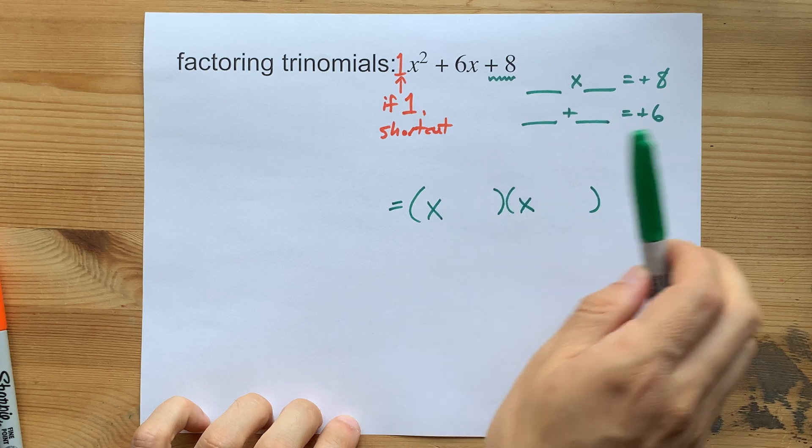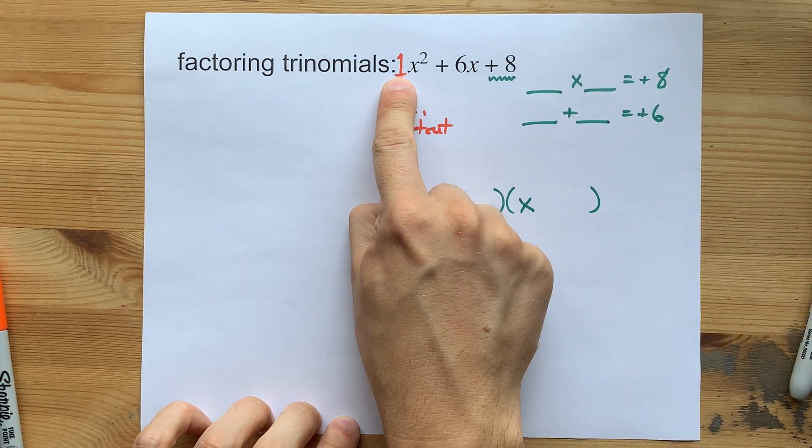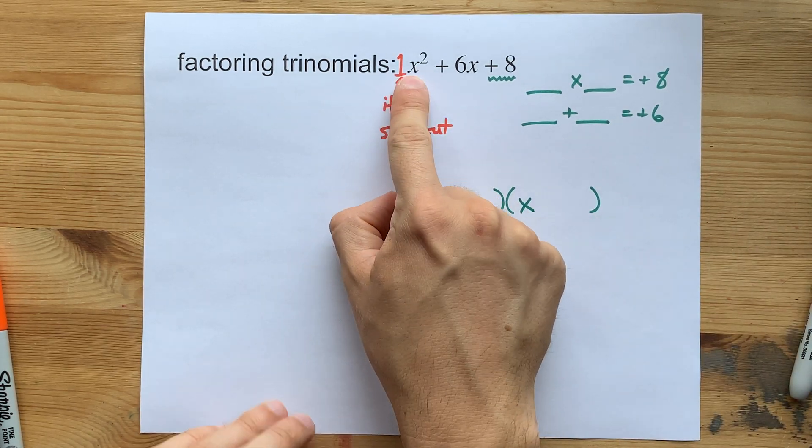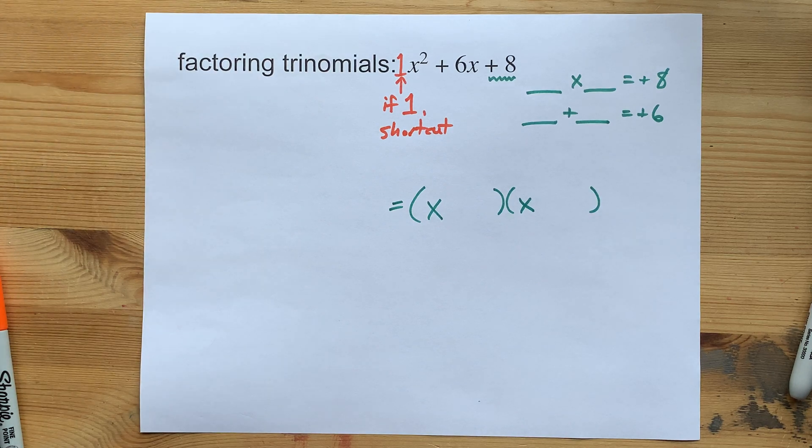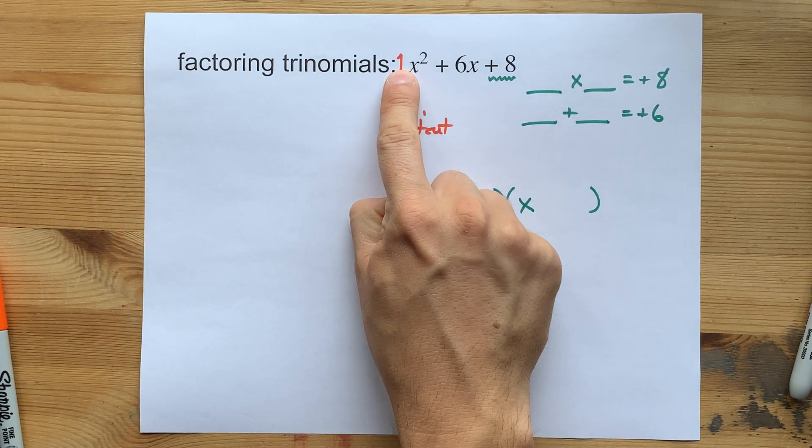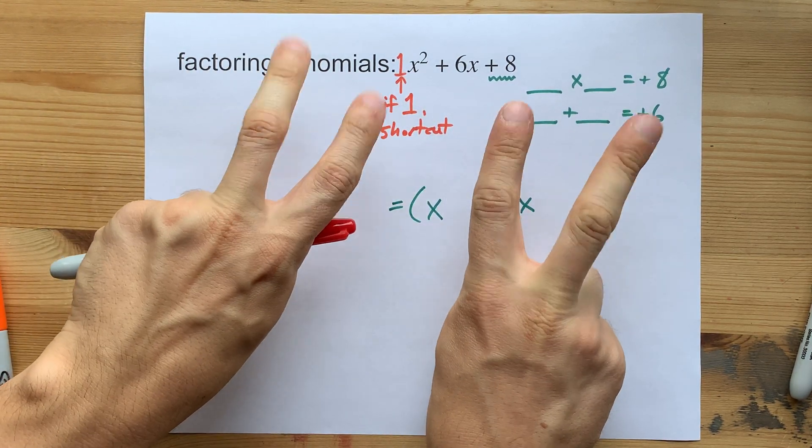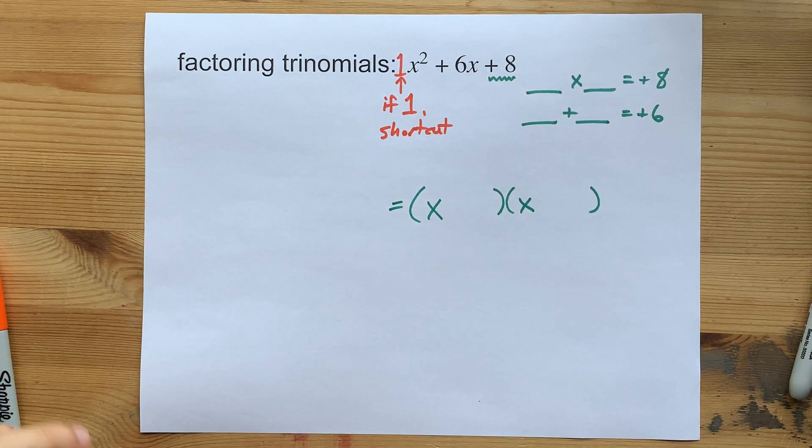This super shortcut only works when there's a 1, aka nothing, written in front of the x squared. If there's something written there, you're going to want something called decomposition. We'll do it in another video.